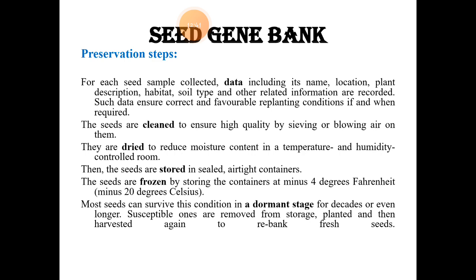Here is a bird's eye view of the seed preservation process. First, seeds of extinct or endangered plant species are collected. Data is recorded including name, location, plant description, habitat, and soil type. Seeds are cleaned to ensure high quality, done either by a sieving process or by blowing air. The clean seeds are then dried to reduce moisture content, suitable for cold storage. Finally, seeds are stored in sealed airtight containers placed at minus 4 degrees centigrade.